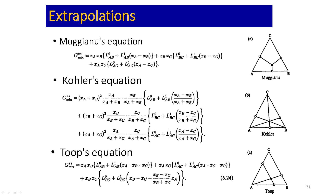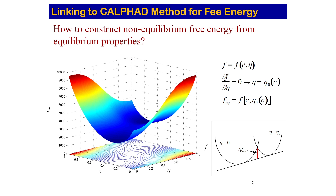In many cases the Muggianu equation does not work well enough, so we must use other approaches like the Kohler or Toop equations, which are much more complex. Muggianu is simple: it uses products x_A x_B, x_B x_C, x_A x_C with interaction parameters L_AB^0, L_AB^1, L_ABC, and so on — that is why it is widely used. Kohler and Toop are more complex but sometimes necessary when Muggianu fails to predict thermodynamic values accurately.